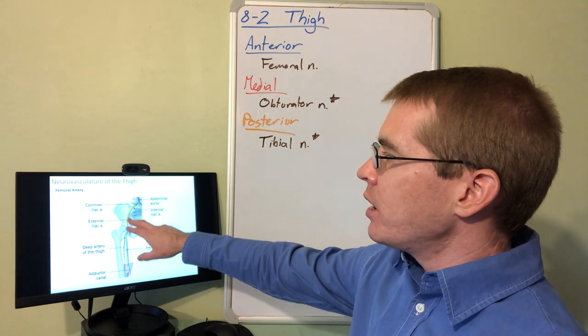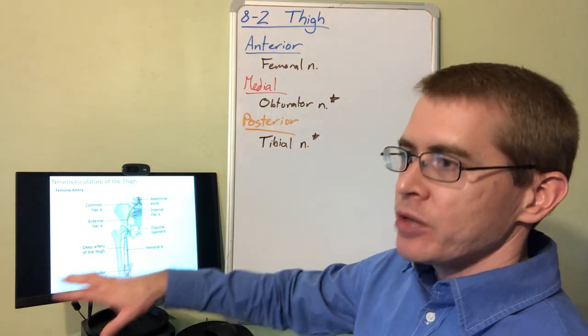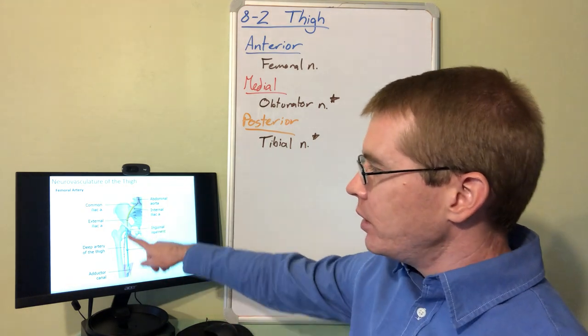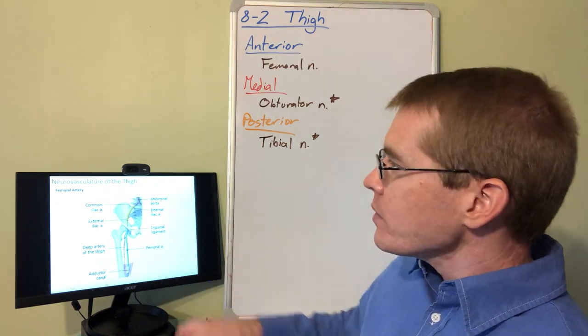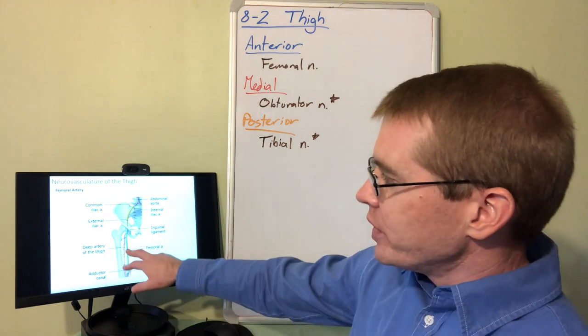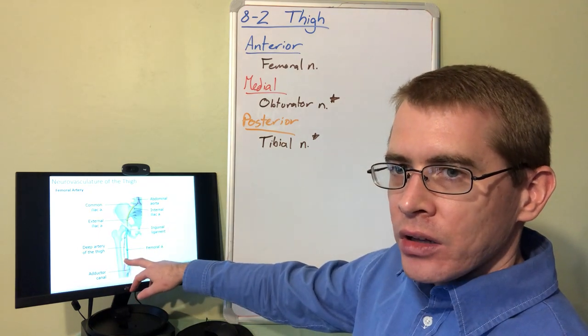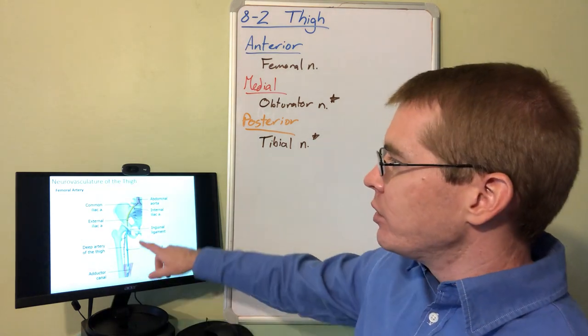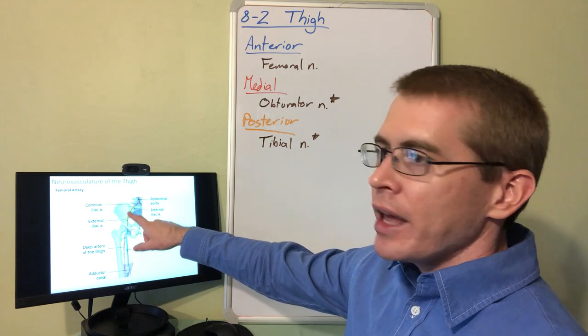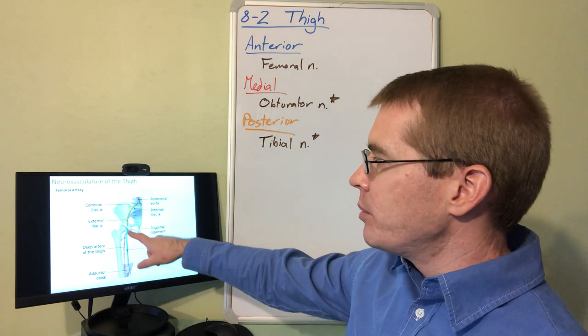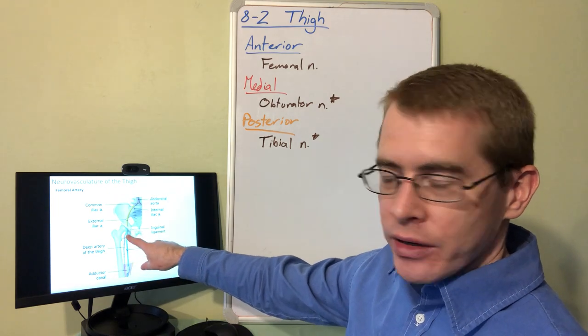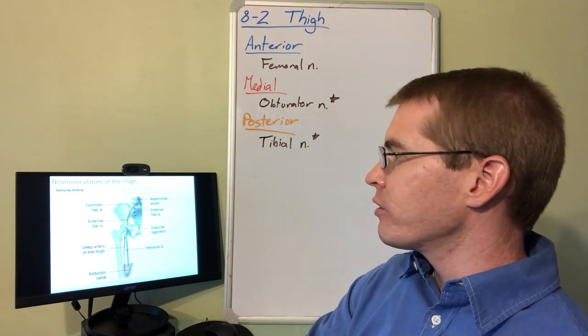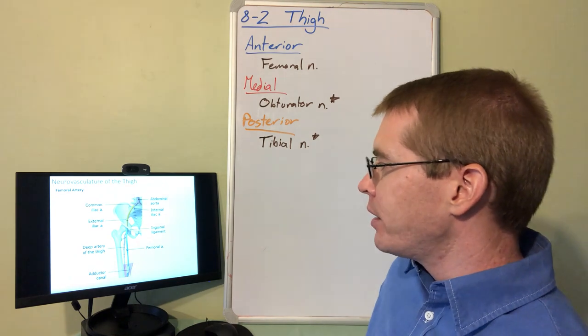Here we see the route, the branching pattern by which the abdominal aorta becomes the femoral artery. We'll notice this similar branching pattern that we saw in the upper limb. Imagine that the external iliac is the axillary artery which is branching, becoming the brachial artery or the femoral artery here. That femoral artery branches to give off a deep artery of the thigh. Just like we had a deep brachial artery, we have a deep femoral artery in the leg.